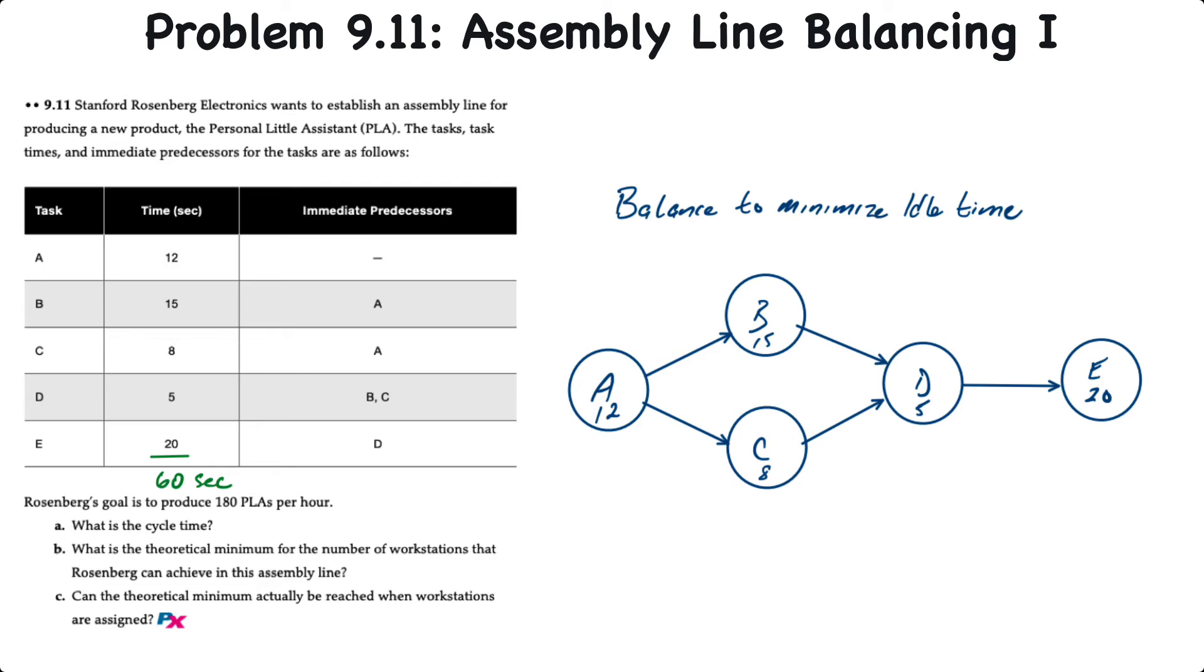You'll probably remember this from project management. A precedes B and C, and both B and C precede activity or task D, which then precedes task E, and the times are listed in the bubble.